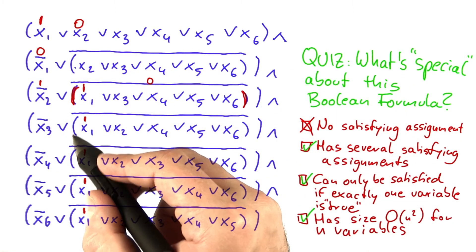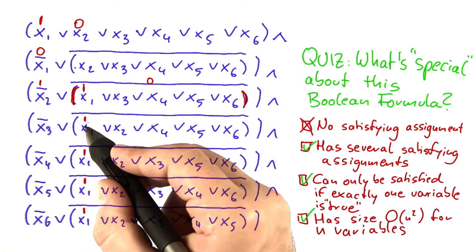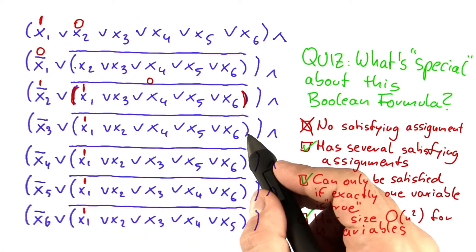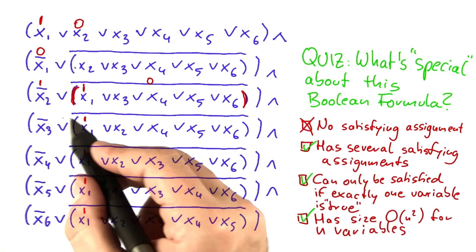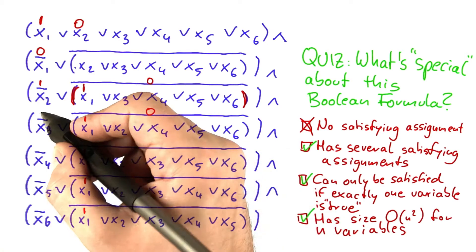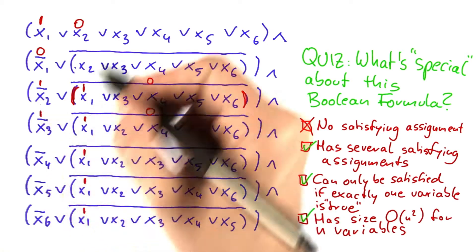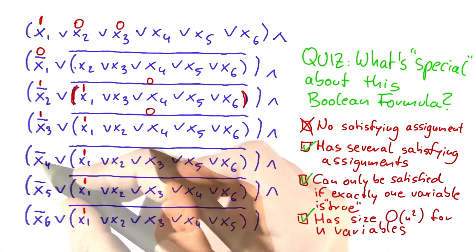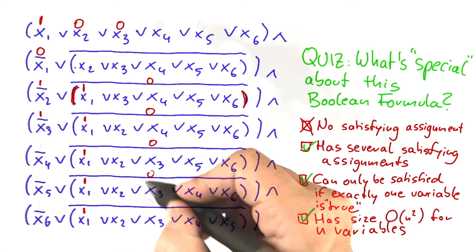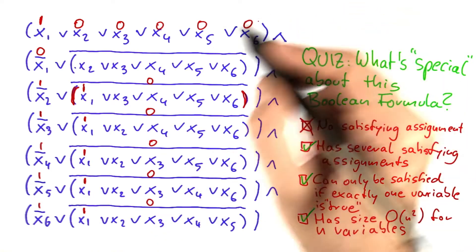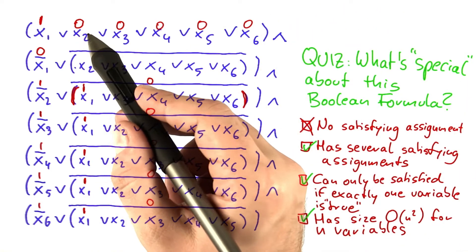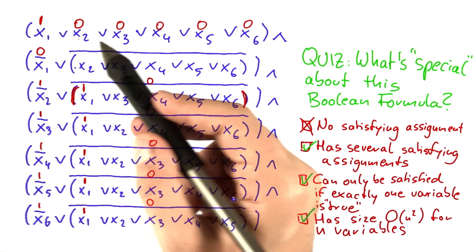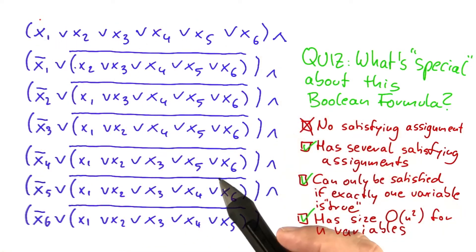For the next bracket, it works the same way, because again we have x1 set to true, so the bracket evaluates to true, so the NOT evaluates to 0. And so again we have to set this to 1, which means x3 is 1, and we can go on through this the same way. So the formula forces us to set every variable except for x1 to false.